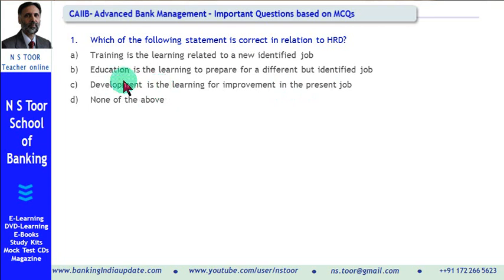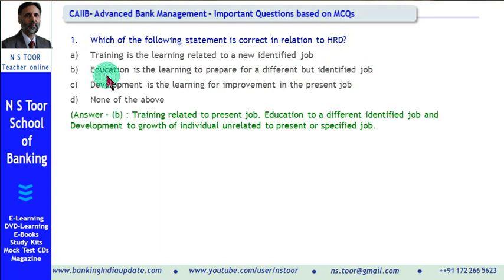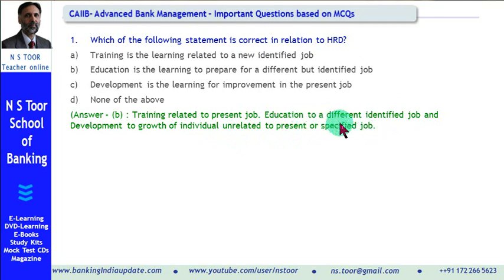Let us examine B: education is the learning to prepare for a different but identified job — yes, this is the correct statement. If someone is to be prepared for a different job which has been identified, whatever learning takes place is called education. So statement B is correct. In summary: training relates to the present job, education to a different identified job, and development to the overall growth of the individual unrelated to any present or specified job.